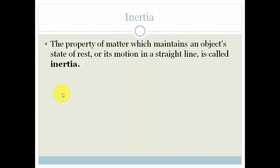Inertia is basically, if we read it carefully, the property of matter which maintains an object's state of rest or its motion in a straight line is called inertia. So basically inertia is a property of matter which demonstrates Newton's first law.